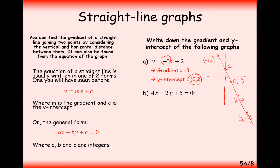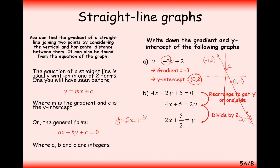Sometimes equations are given in a different form. To pick off the gradient and y-intercept, just rearrange to make y the subject. For example, add y to one side, then divide through by 2 to get y equals 2x plus 5 over 2. Since 5 over 2 is 2.5, we start at 2.5 and go right 1, up 2, giving coordinates 1, 4.5 then 2, 6.5. The gradient is 2 and the y-intercept is 2.5.